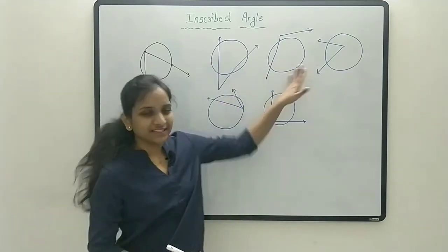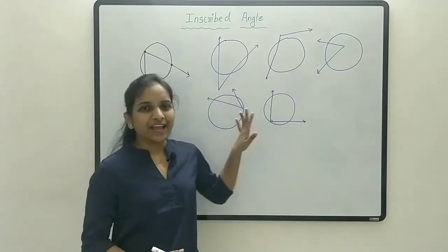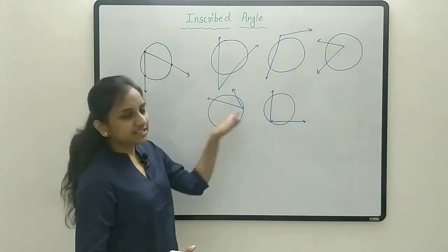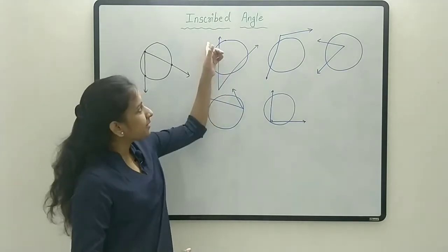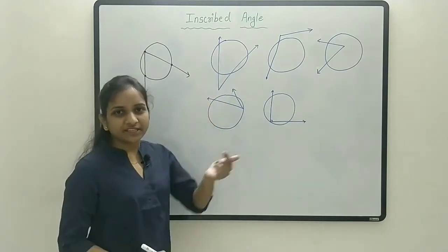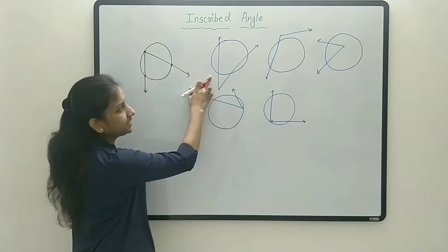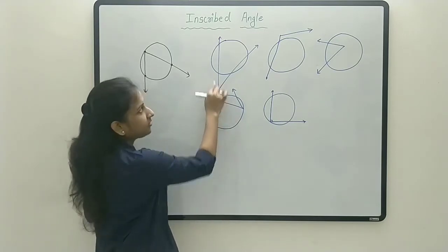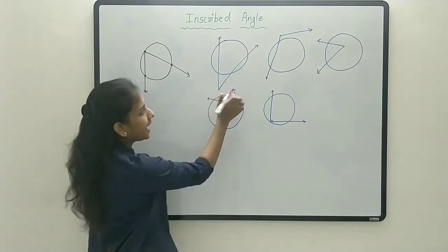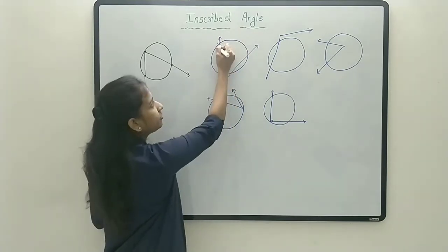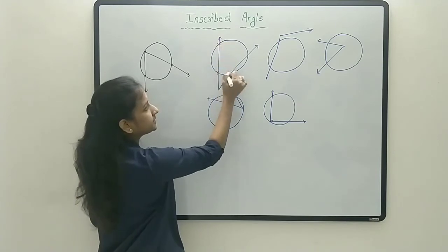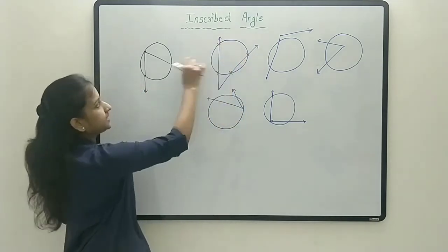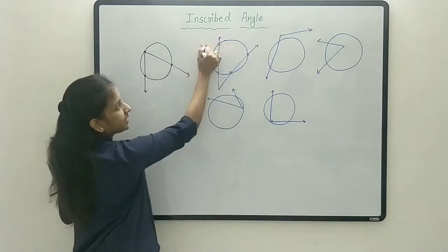Here I have taken a few examples. Let's find out which of these are inscribed angles and which are not. In this first example, the vertex of the angle is outside the circle and there are four common points, so this is not an inscribed angle.